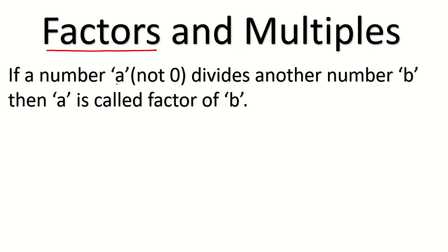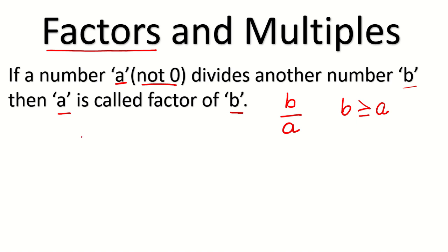Let's discuss all these things in detail. First, we will talk about the factor. Factor means if a number A, which is not equal to 0, divides another number B, then A is called a factor of B. If B is divided by A, it means B will be greater than or equal to A, because we are talking about complete division, not decimals. So the factor of any number will be smaller than or equal to the number.